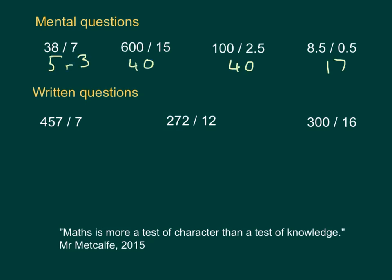So, for the mental questions, 7 5s are 35, and the difference between 35 and 38 is 3. So, 5 remainder 3, or 5 and 3 7ths. How many 15s in 600? Well, I would probably think there's 10 15s in 150, and then 4 lots of 150 in 600. So, that will give me 40.